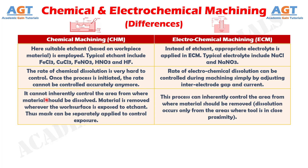Difference No. 8: Chemical machining cannot inherently control the area from where material should be dissolved. Material is removed wherever the work surface is exposed to the etchant, so a mask can be separately applied to control exposure, whereas electrochemical machining can inherently control the area from where material should be removed. Dissolution occurs only from the areas where the tool is in close proximity.